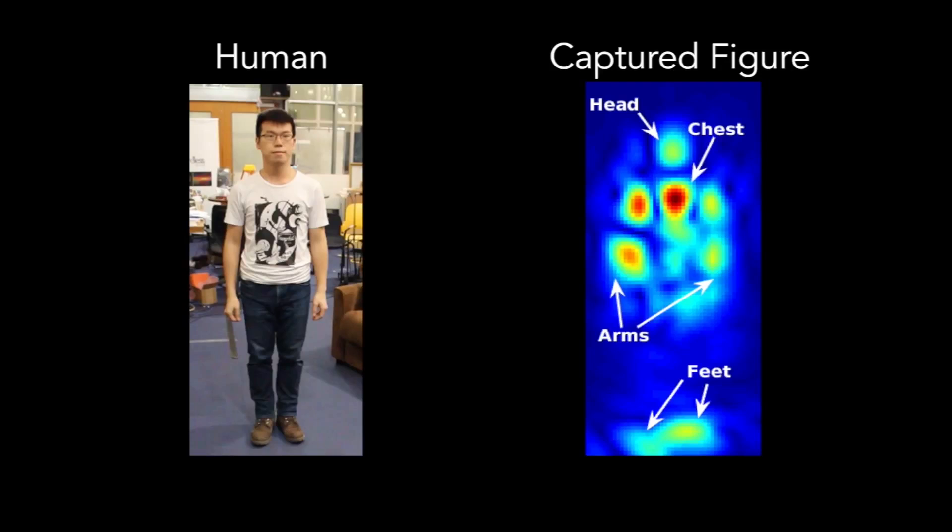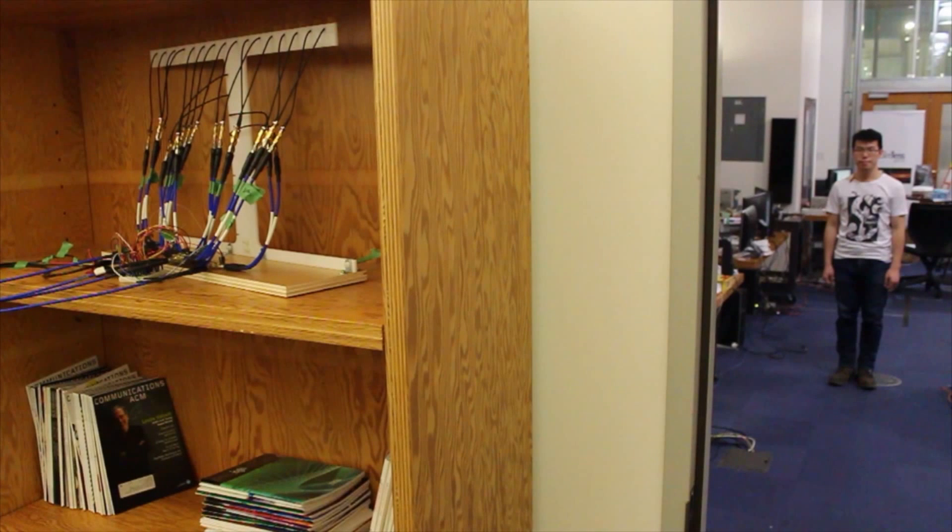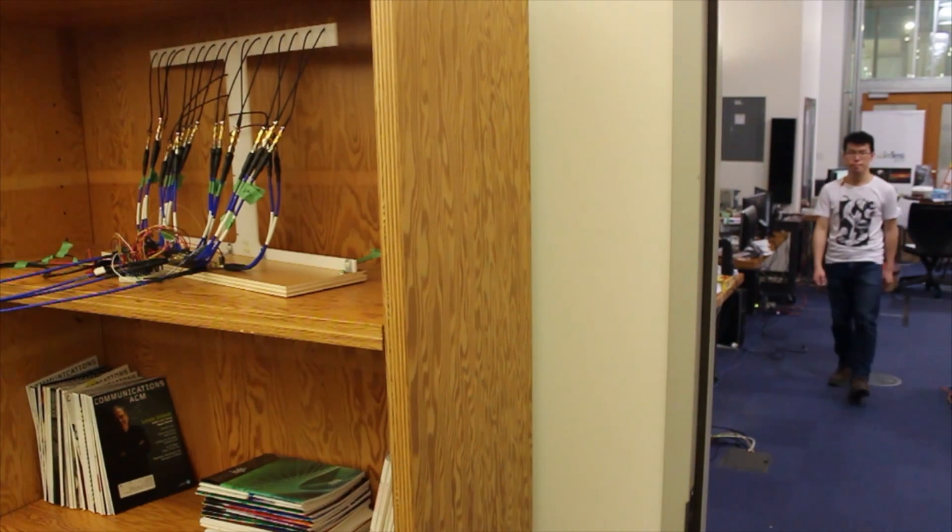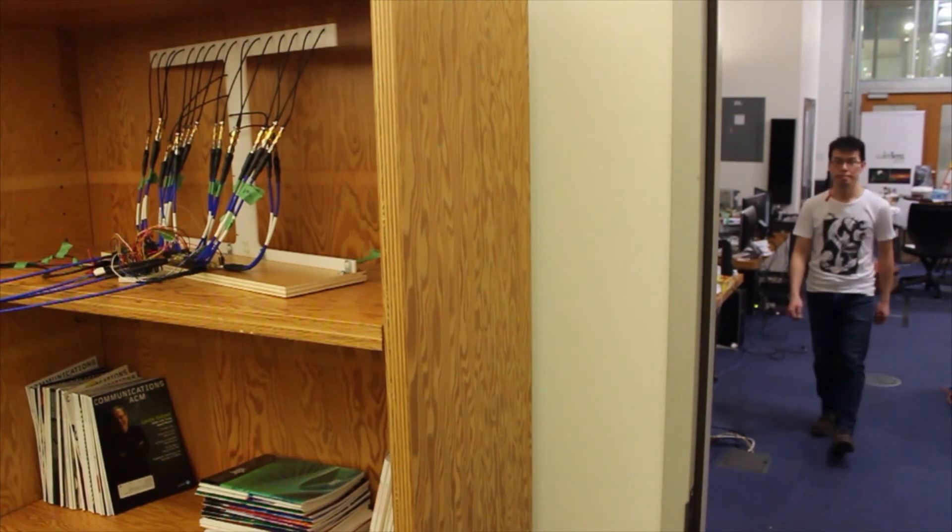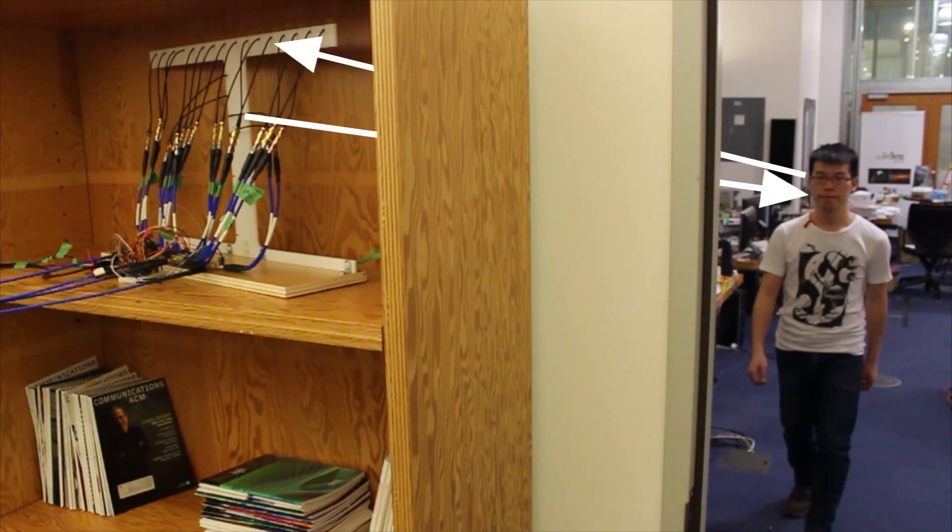Here, we can see the person's head, chest, arms and feet. How does this work? The device operates by transmitting wireless signals that traverse the wall, reflect off the human body and come back. At every point in time, only a subset of human body parts reflect the signal back to the device.